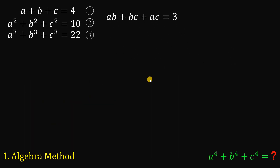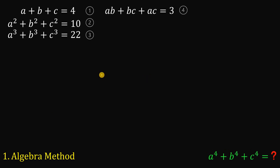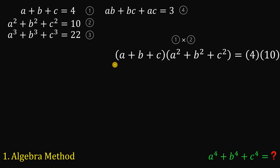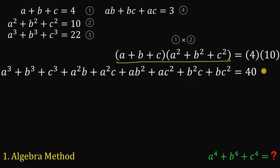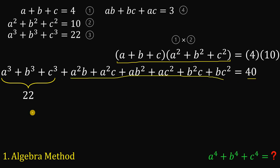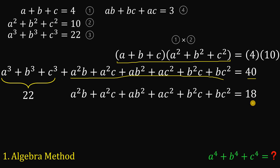Now let's multiply equation one and equation two. Distributing the left-hand side gives a product expression, and the right-hand side equals 40. We have a cubed plus b cubed plus c cubed, which from equation three equals 22. So the remaining expression is equivalent to 40 minus 22, which is simply 18. We'll call this equation five.